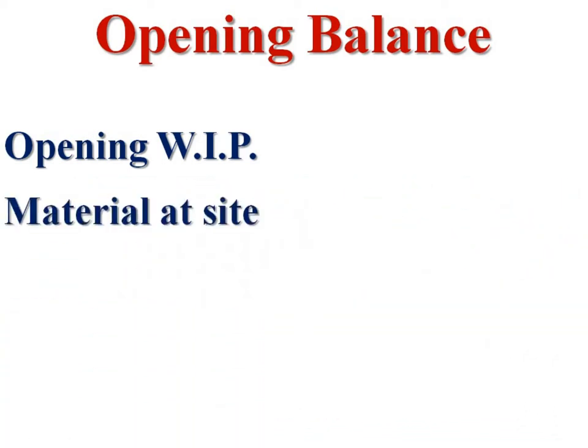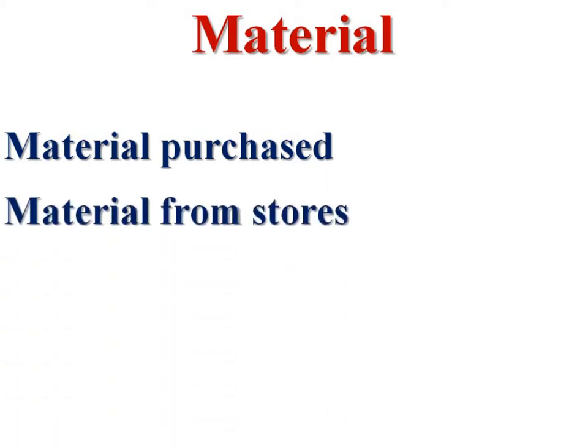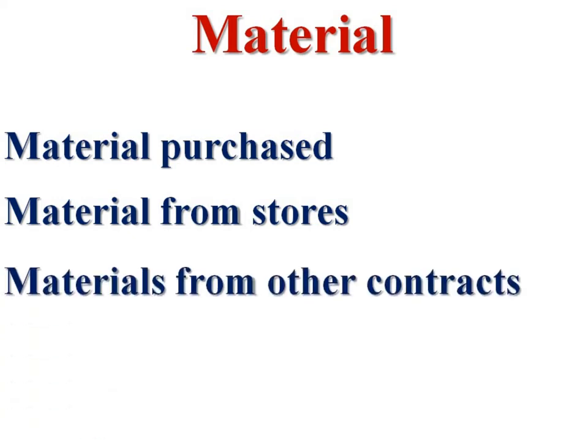Opening material at the site and opening plant at the site are to be debited to the contract account as opening balances. Material is a major part of contract costing. Contract cost consists of material — material purchased for this contract during the year, materials issued from stores, and materials transferred from other contracts. These are to be debited in the contract account.